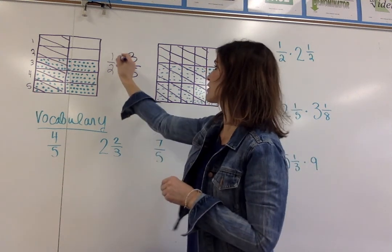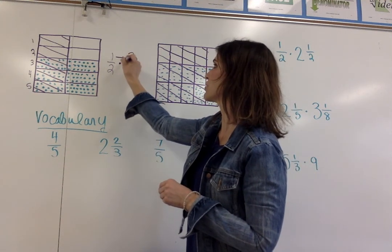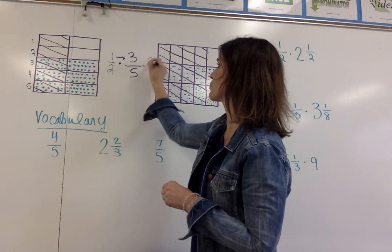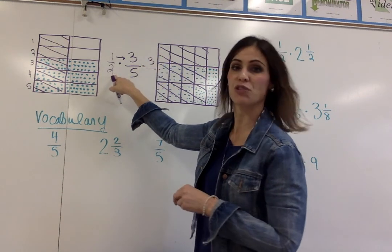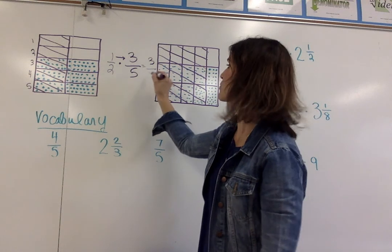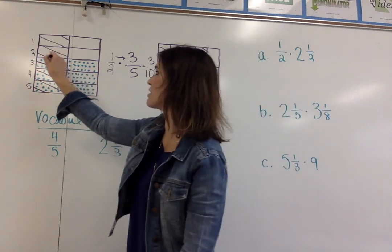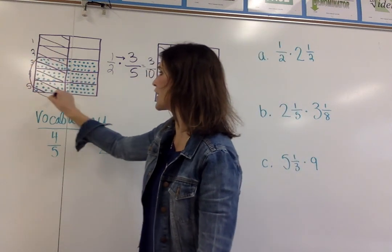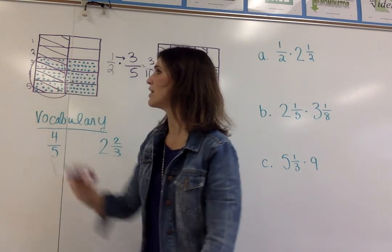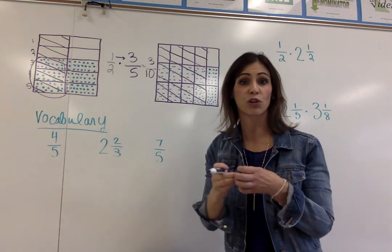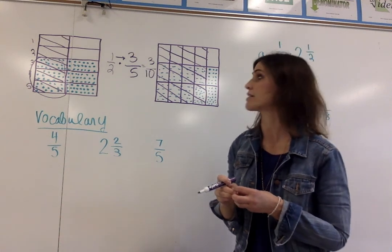To find that product, I am going to multiply the two numerators together, which is one times three, and then multiply the two denominators together — two times five, which is ten. You can see that in this figure, three out of the total ten rectangles are overlapped by the dots and by the diagonal lines.